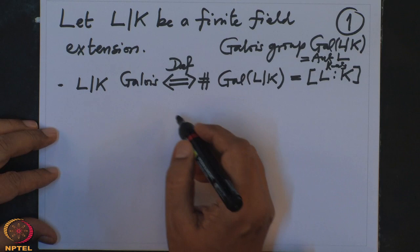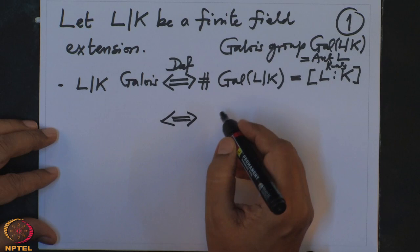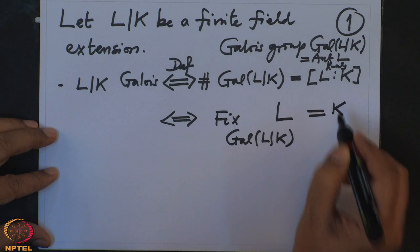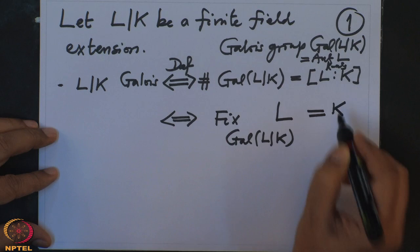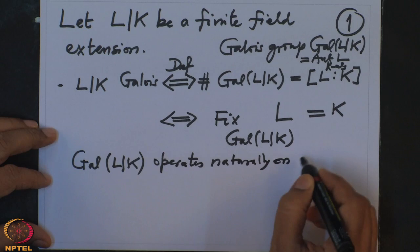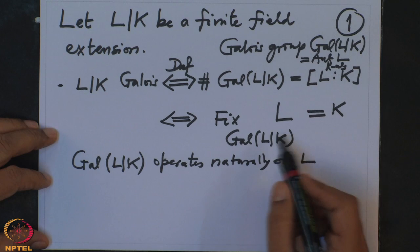Another thing we proved is the if-and-only-if condition: the Galois group operates on L and the fixed field of the Galois group action on L is precisely the base field K. So the extension is Galois if and only if the fixed field of Gal(L/K) acting on L equals K.